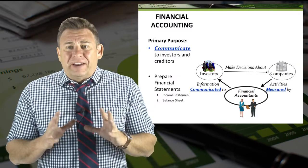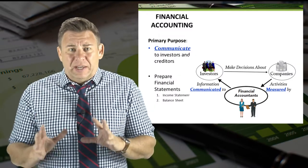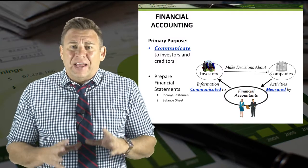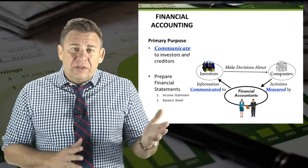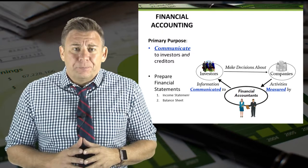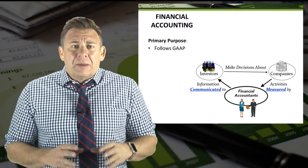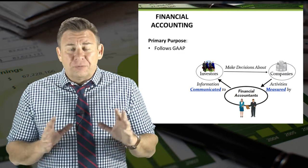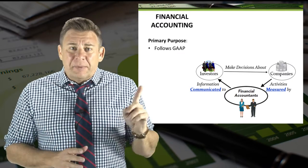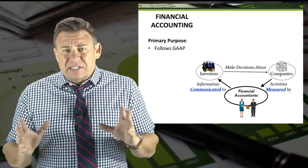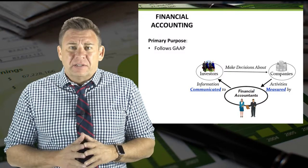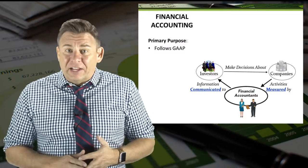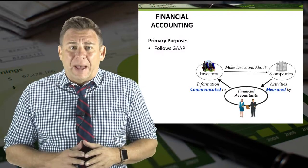The way financial accounts communicate information to a company is through the standardized financial statements, including the income statement and the balance sheet. Because financial data is communicated externally and used by investors and creditors to make decisions and comparisons about companies, the data must be standardized. Thus, financial accounting must follow GAAP.